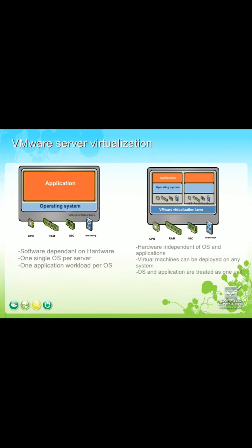VMware server virtualization — in the first diagram, the application is placed over the operating system, and then your CPU, RAM, NIC, and memory card are all shared by VMware. Here the software is dependent on hardware, with one single operating system per server and one application workload per OS.